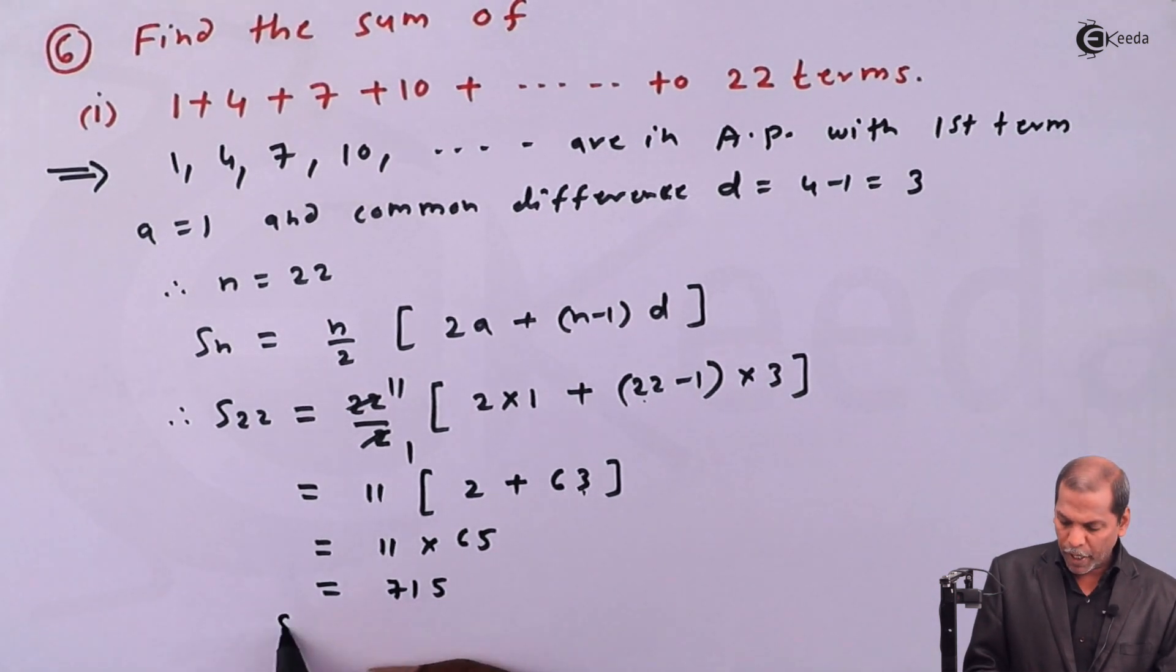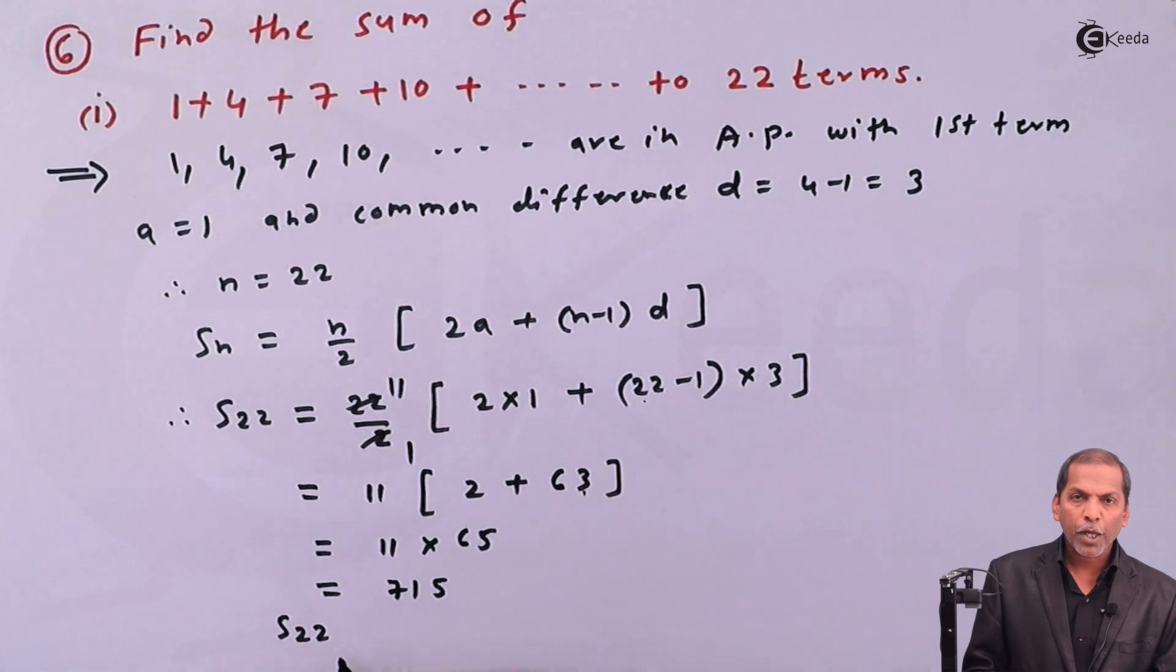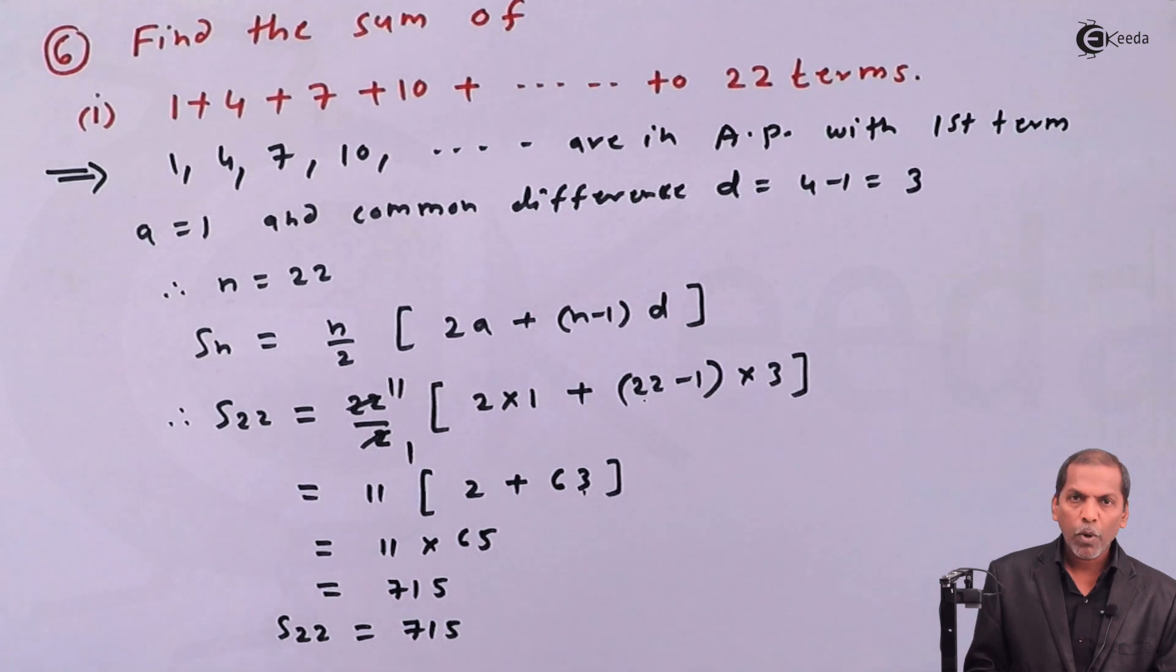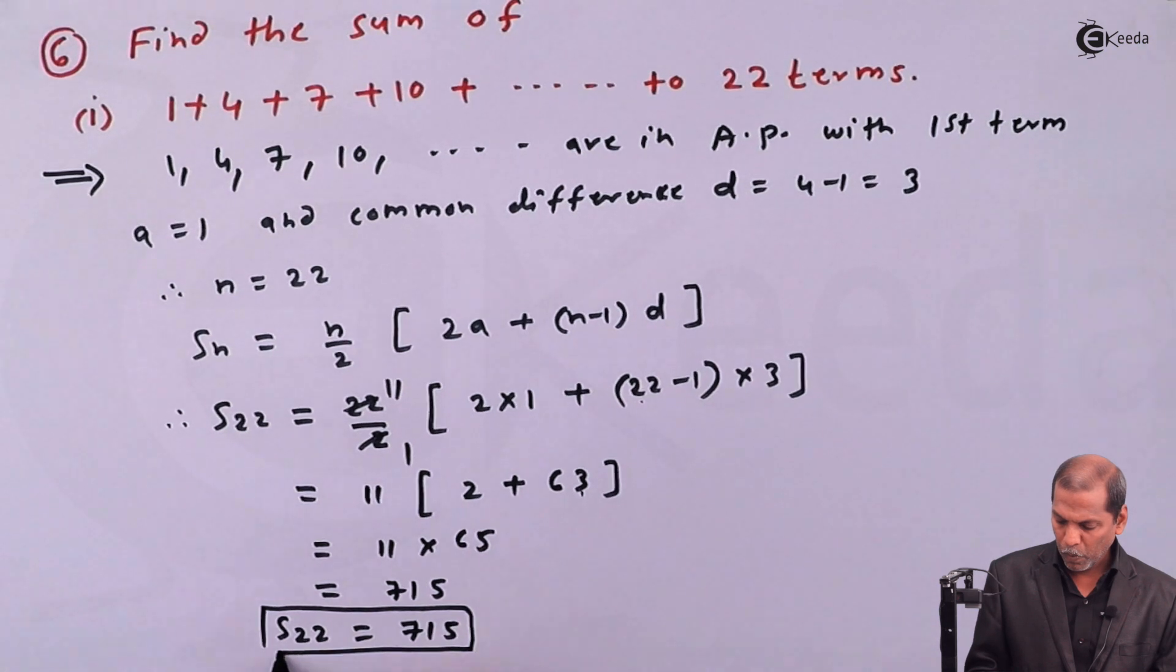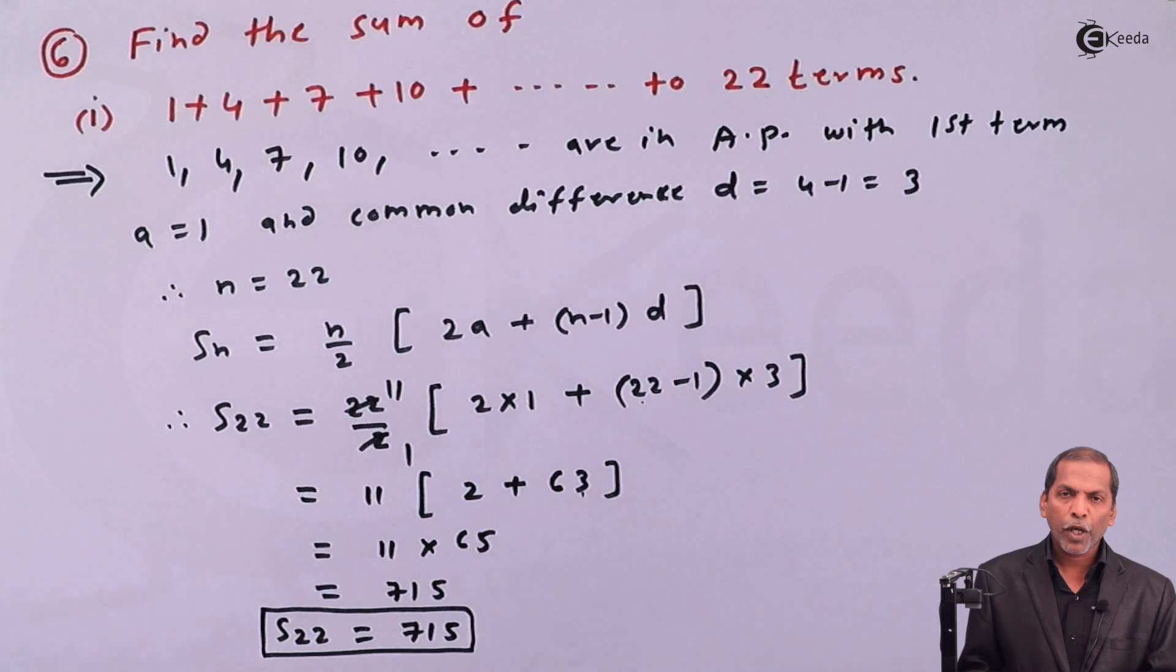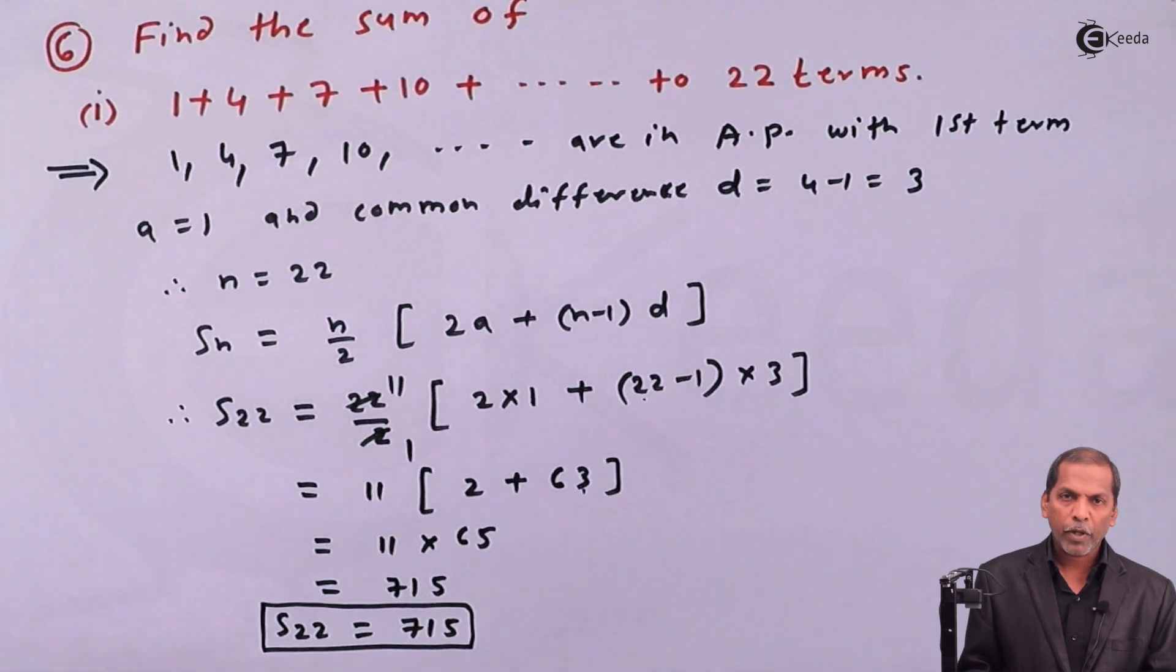In this way, we get the sum of first 22 terms, that is S_22 equal to 715. This is the required solution for the given problem. Thank you.